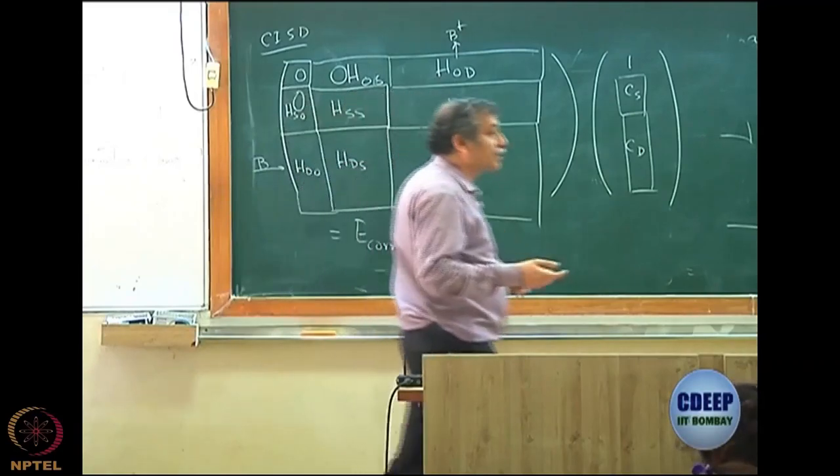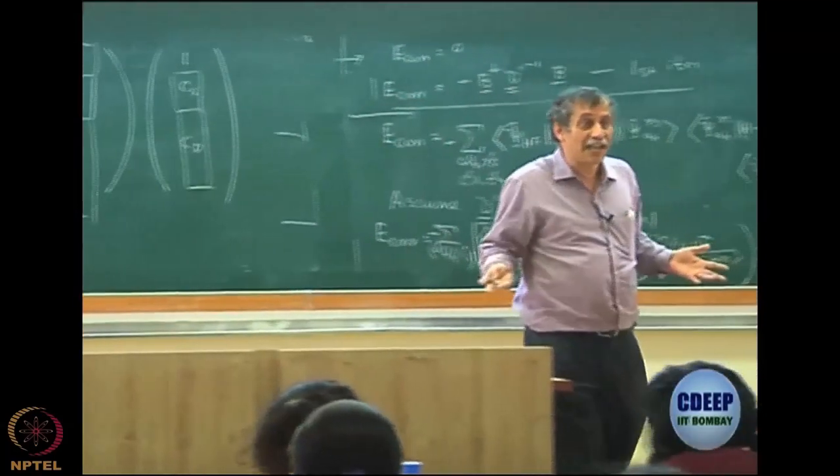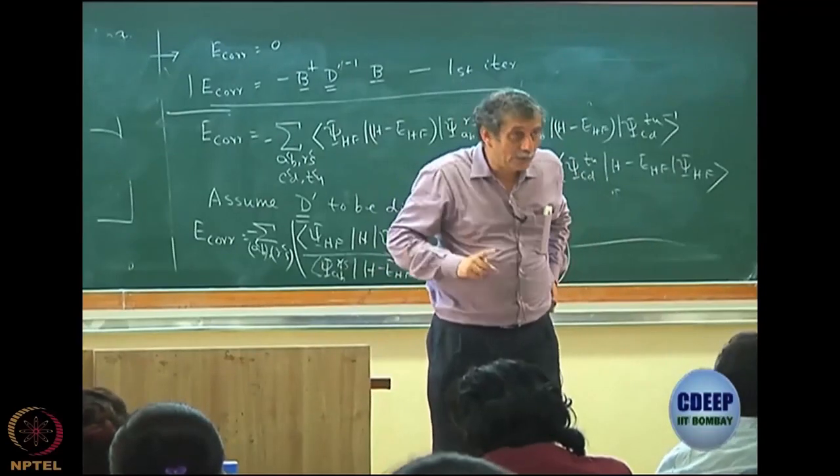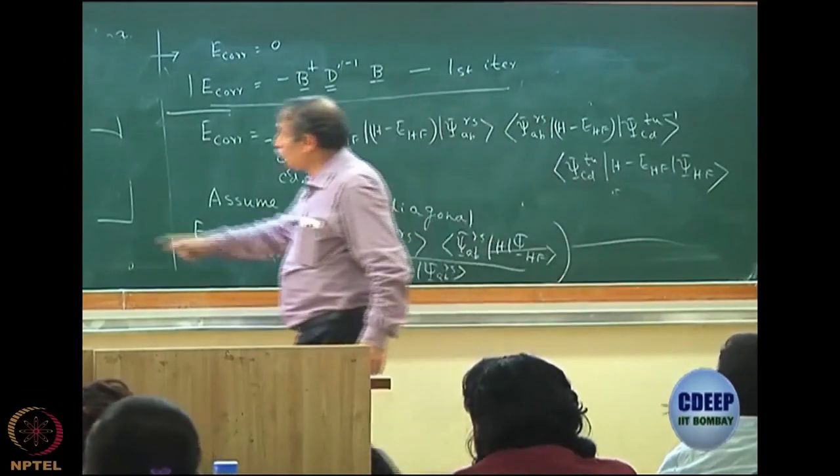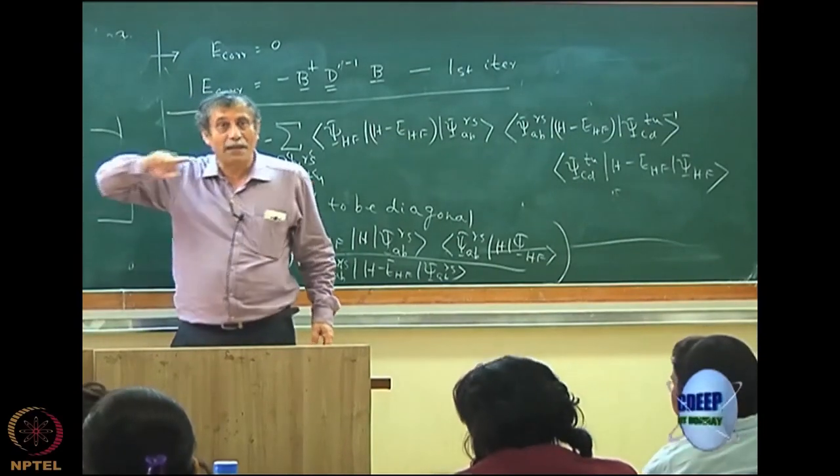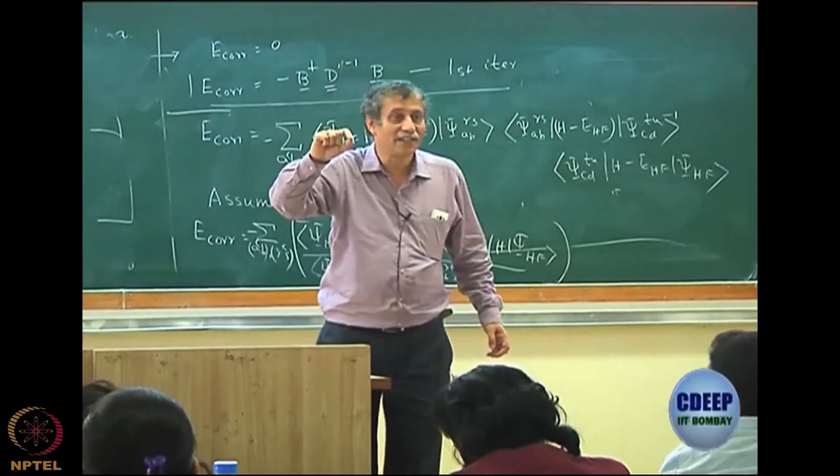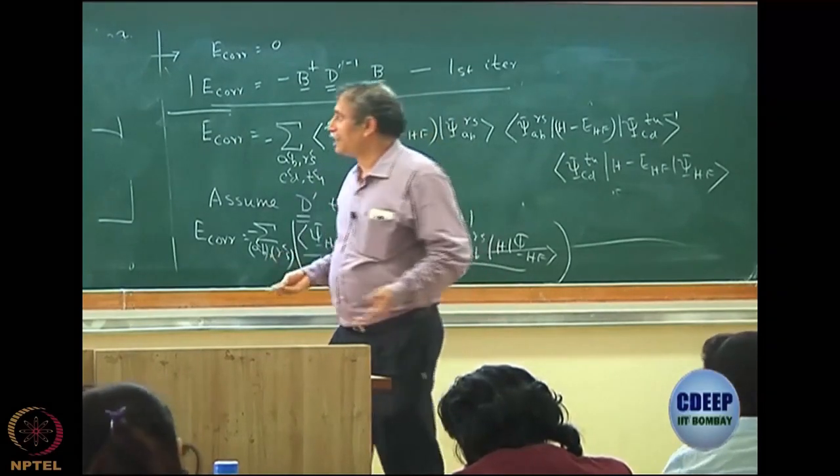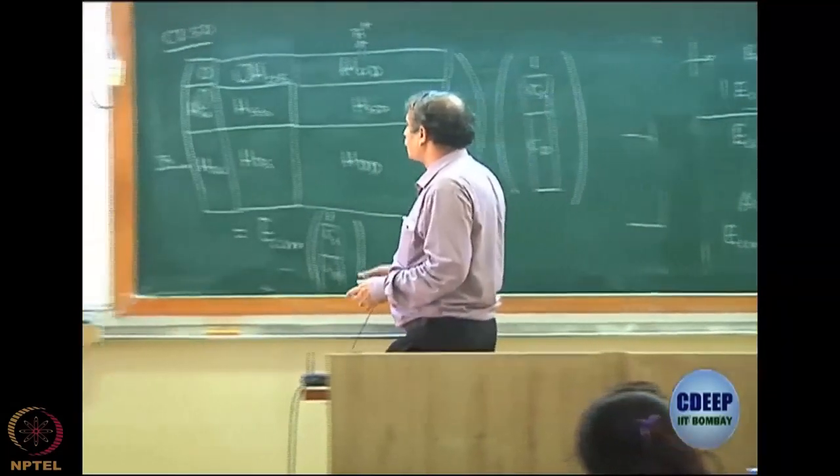So the question that you should ask then, why should I do CISD? I should be happy with CI doubles. The answer is no, because when I calculate C, then you will see the changes will take place because my generic expression is B dagger C, but what is the value of C? If that is different then correlation energy will be different. So you will see for the next set of equation.